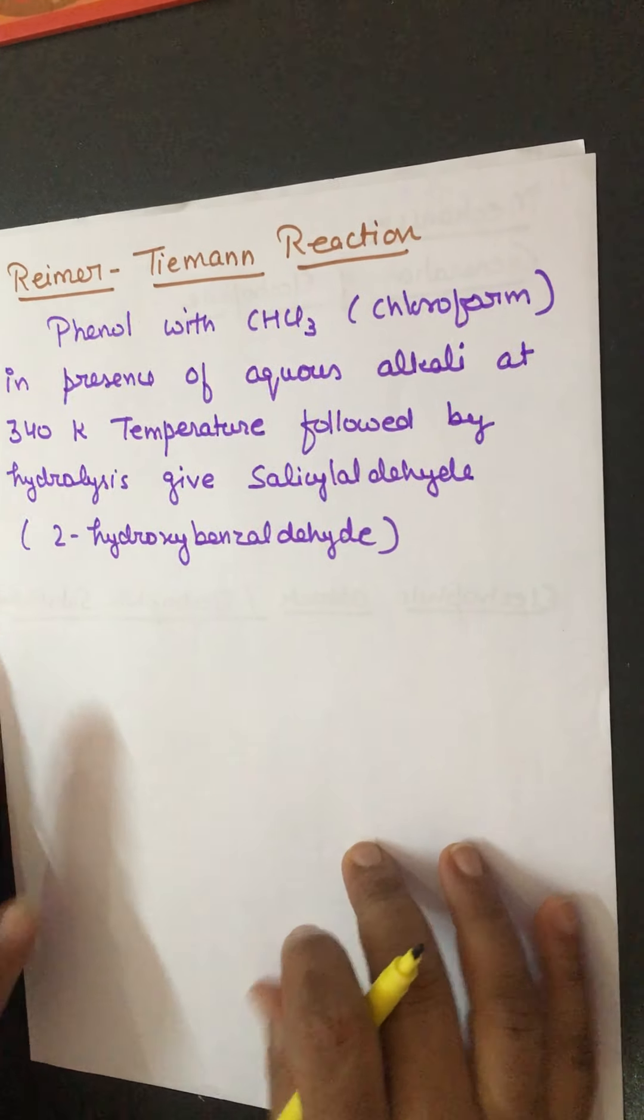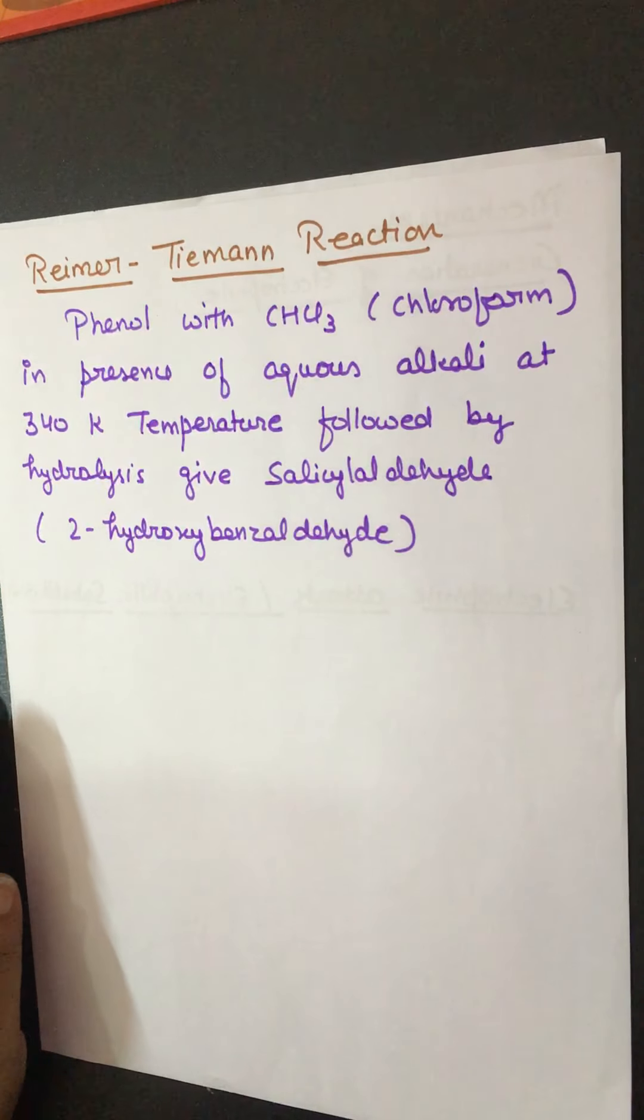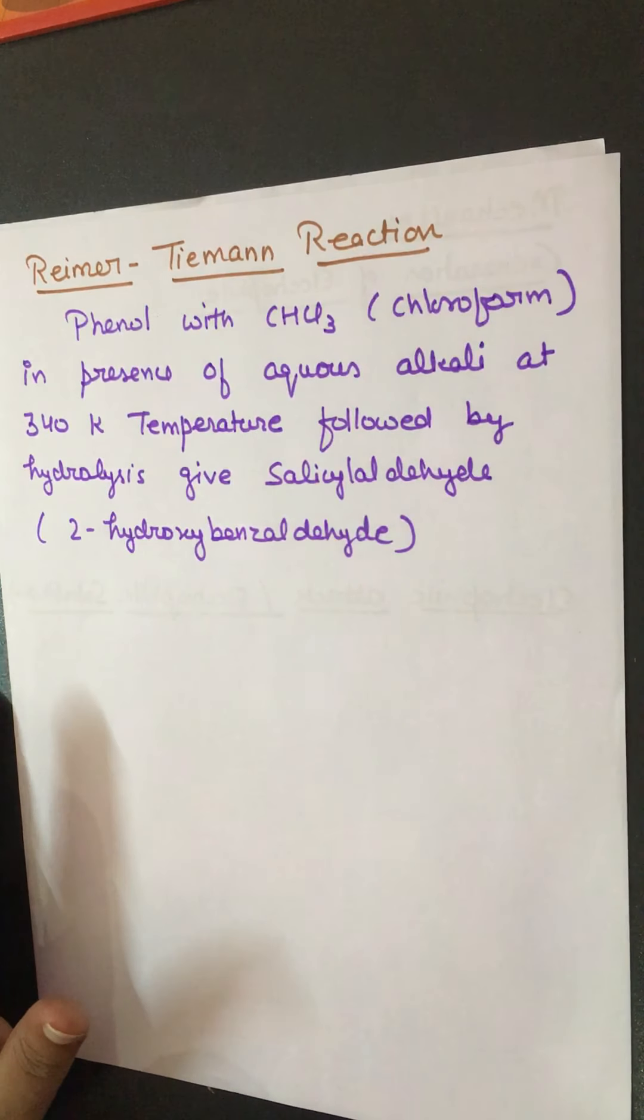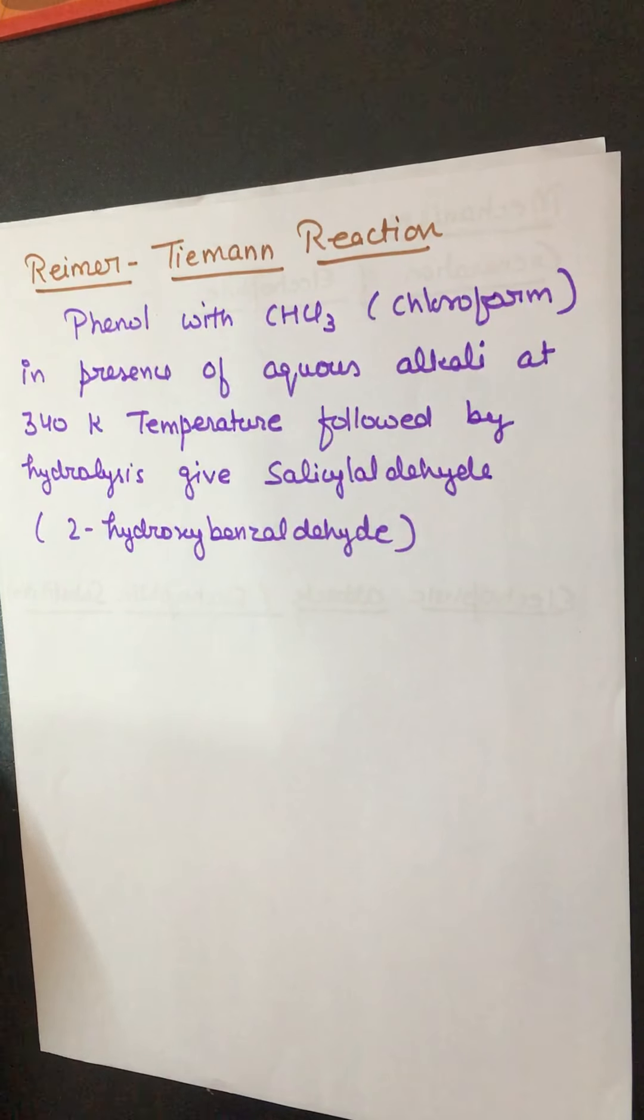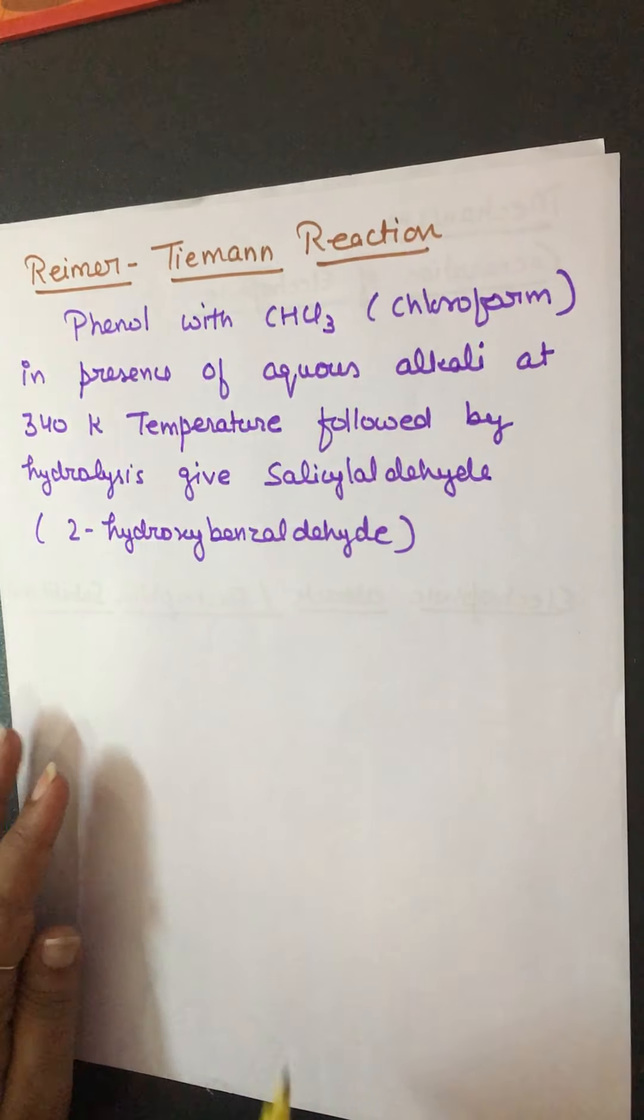In this video we will consider the Reimer-Tiemann reaction. It is a named reaction in which phenol reacts with chloroform in presence of aqueous alkali at 340 Kelvin temperature, which on hydrolysis gives out salicylaldehyde.